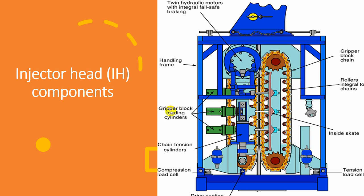The traction cylinder is connected to and pushes against the skate bar. The cycle is as follows: the traction cylinder pushes against the inside skate or skate bar; the skate bar pushes the rollers; the rollers push the chain, which is connected to the gripper blocks; and the gripper blocks grip the coiltube itself.